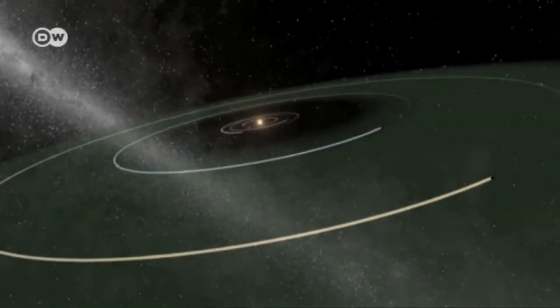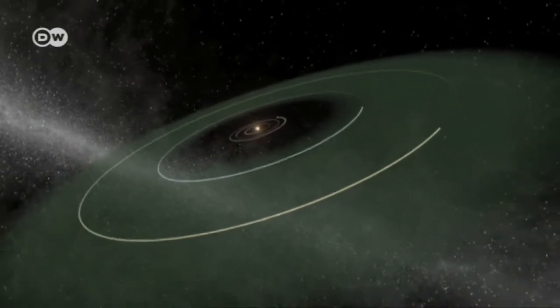There are now thought to be many more such planets than previously thought. Based on Kepler's discoveries, we can estimate that there are maybe 50 billion planets in the Milky Way, of which 500 million could be habitable.